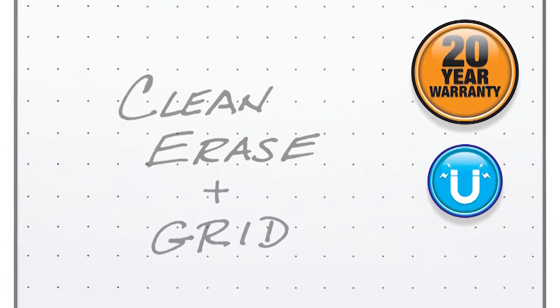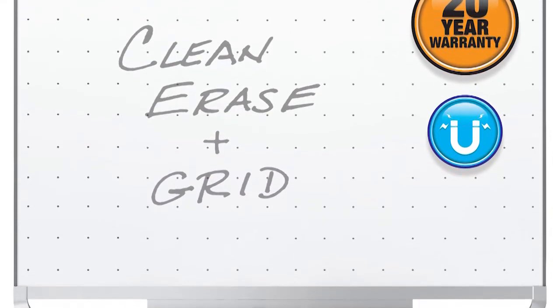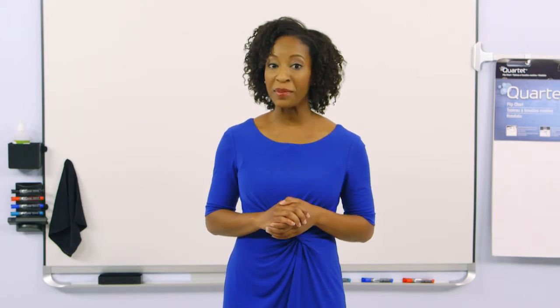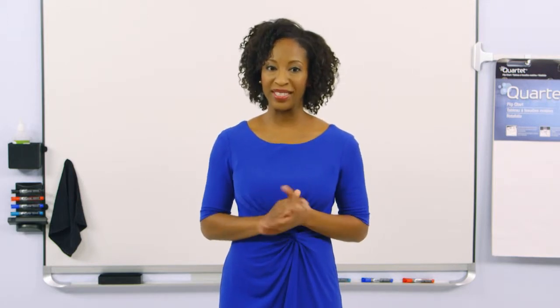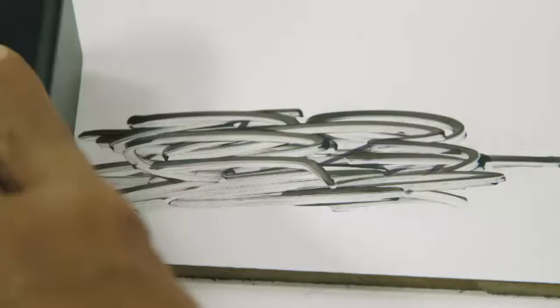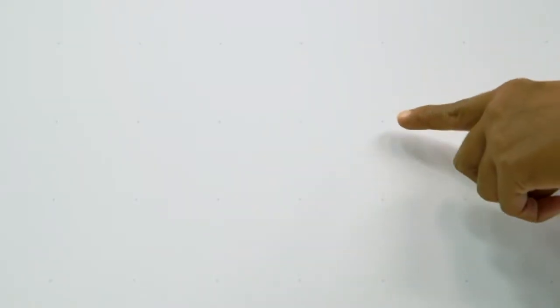When you need a rock solid whiteboard, choose a magnetic total erase whiteboard that comes with a 20 year warranty. This tough surface is second only to a Duramax porcelain board for durability. It is designed to withstand heavy use in commercial, industrial or educational environments.